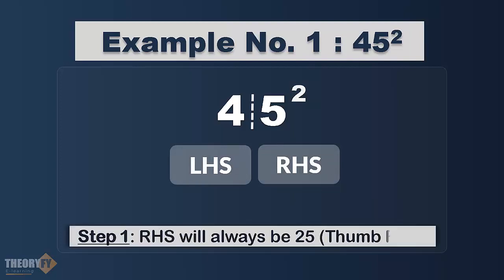Step 1 is to solve RHS — what we do is we just find the square of 5, and that is 25. So whenever you find the square of any number which ends with 5, its square will have 25 at the end. Remember this as a thumb rule. So RHS will be 25.